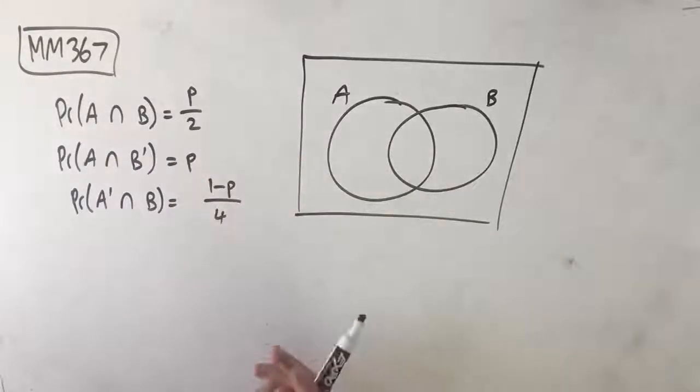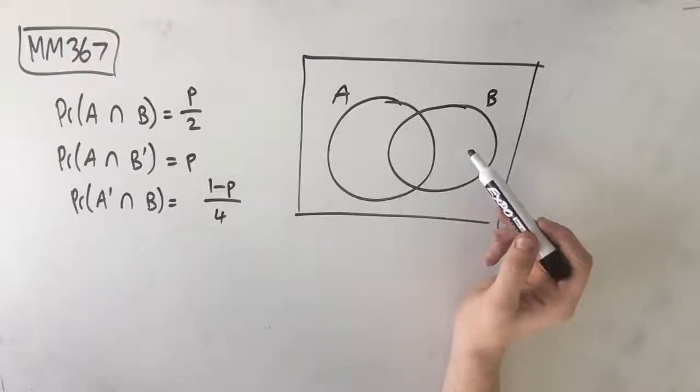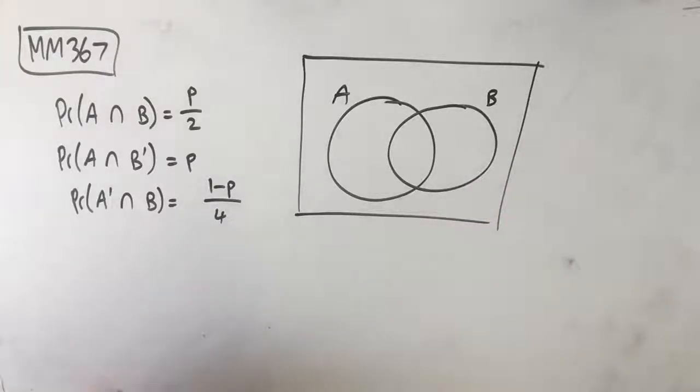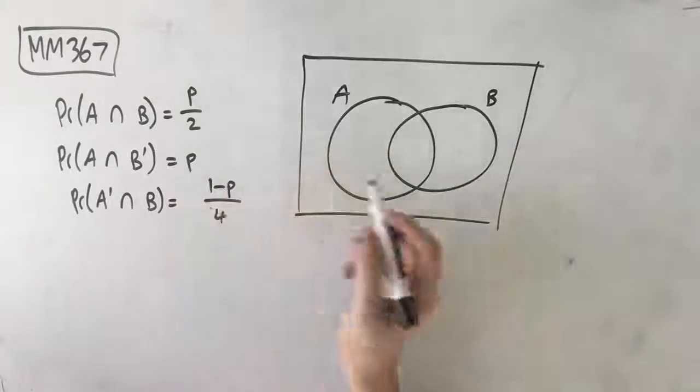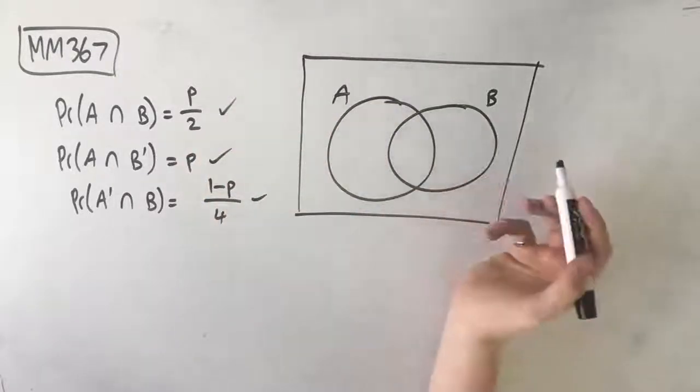The value of P is... so we need to find this value of P. The easiest way to see what's going on here is to draw a Venn diagram. We're going to use each piece of information to fill in our Venn diagram.